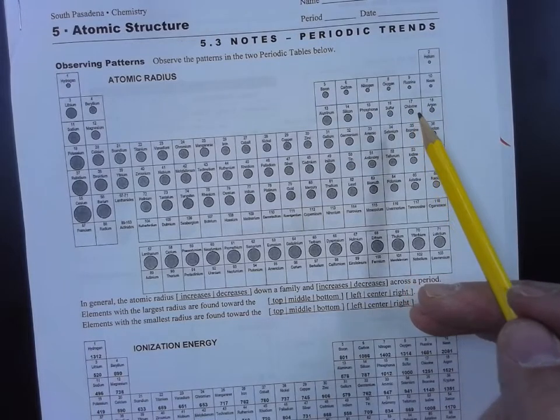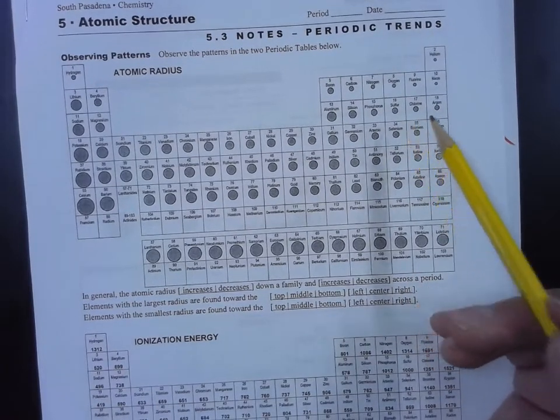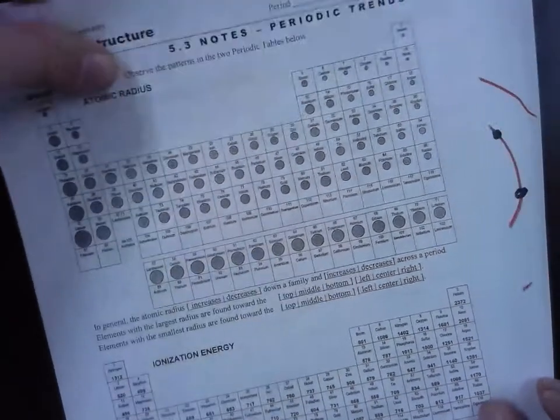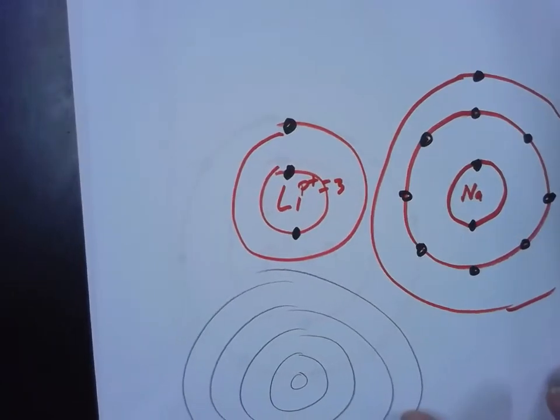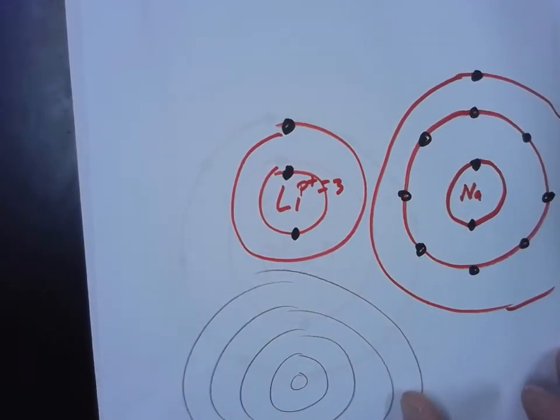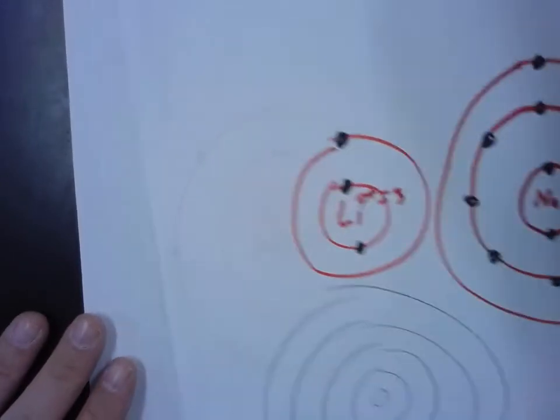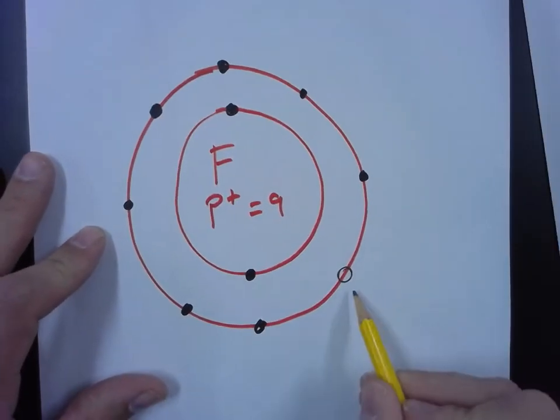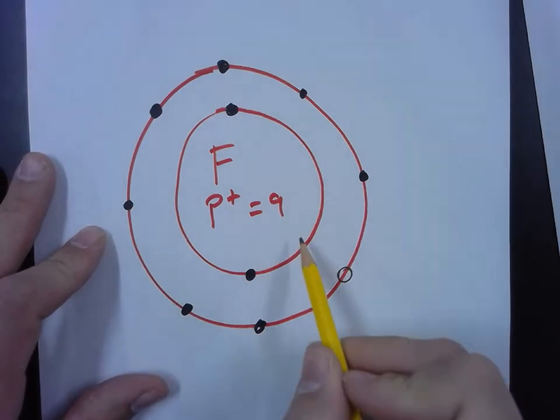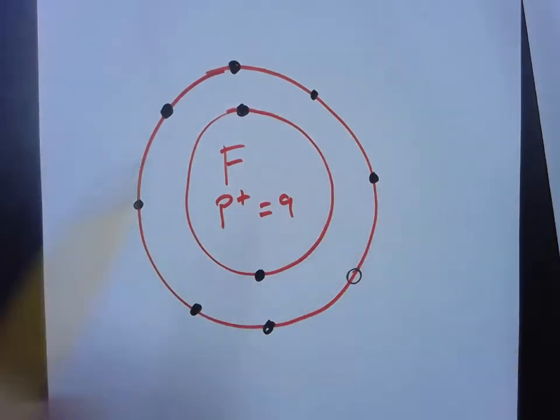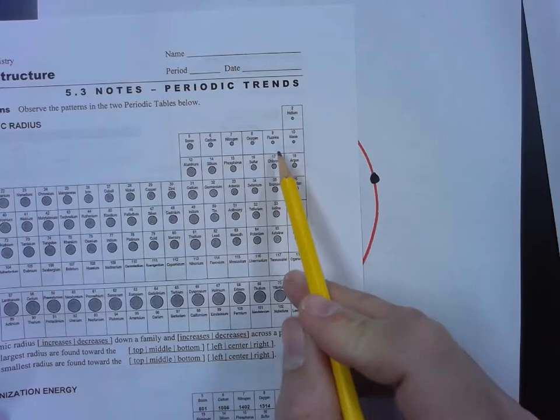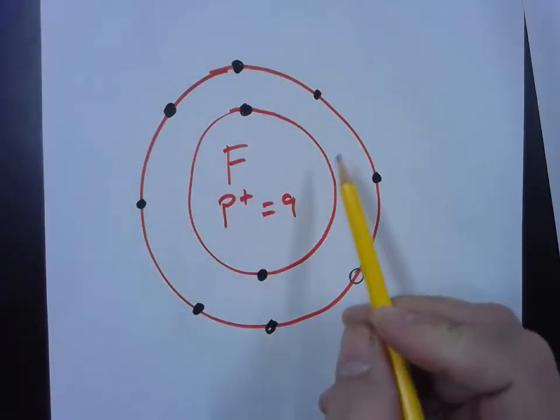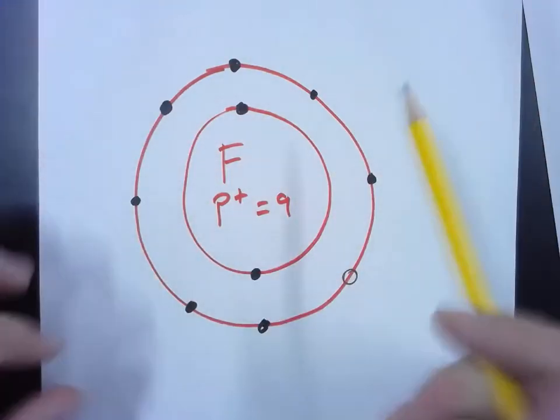So let's go back to our fluorine example. We have fluorine versus lithium. Fluorine has one empty seat, nine protons, and we already know that its radius is very small because these nine protons are pulling these electrons in towards the center.